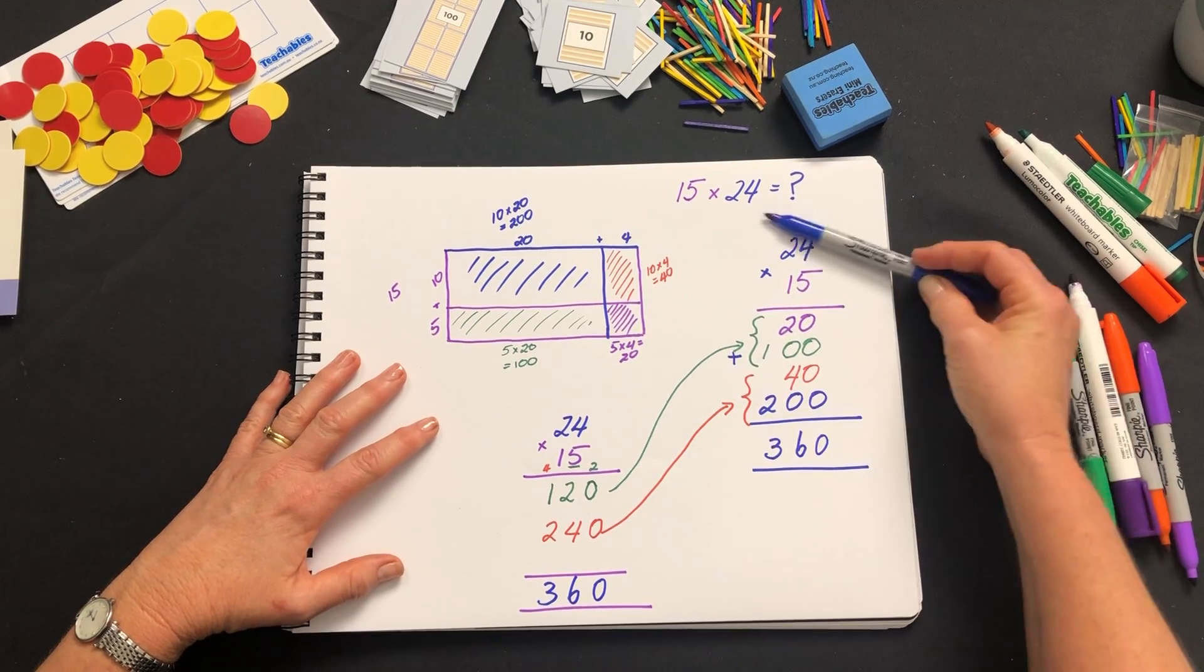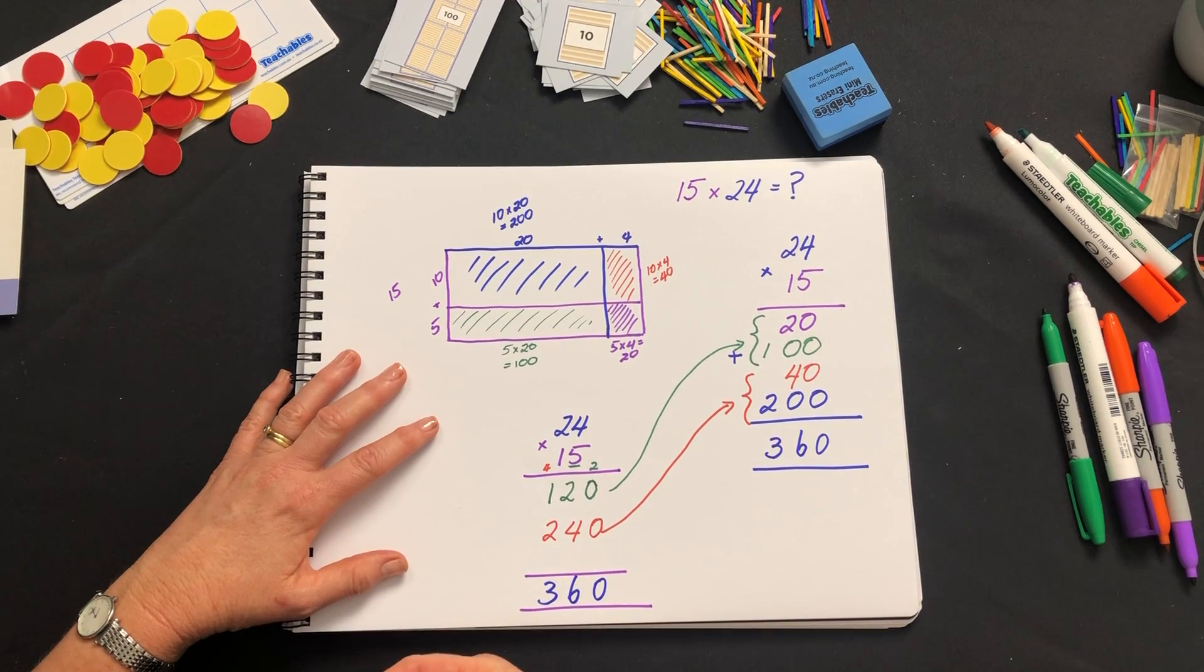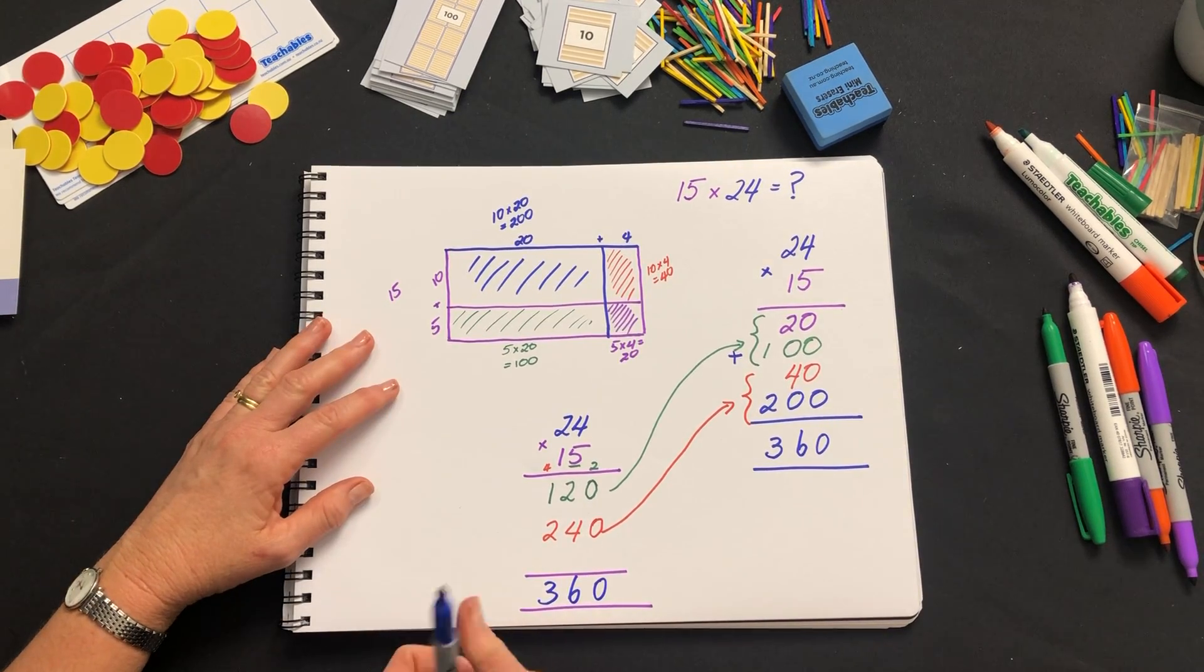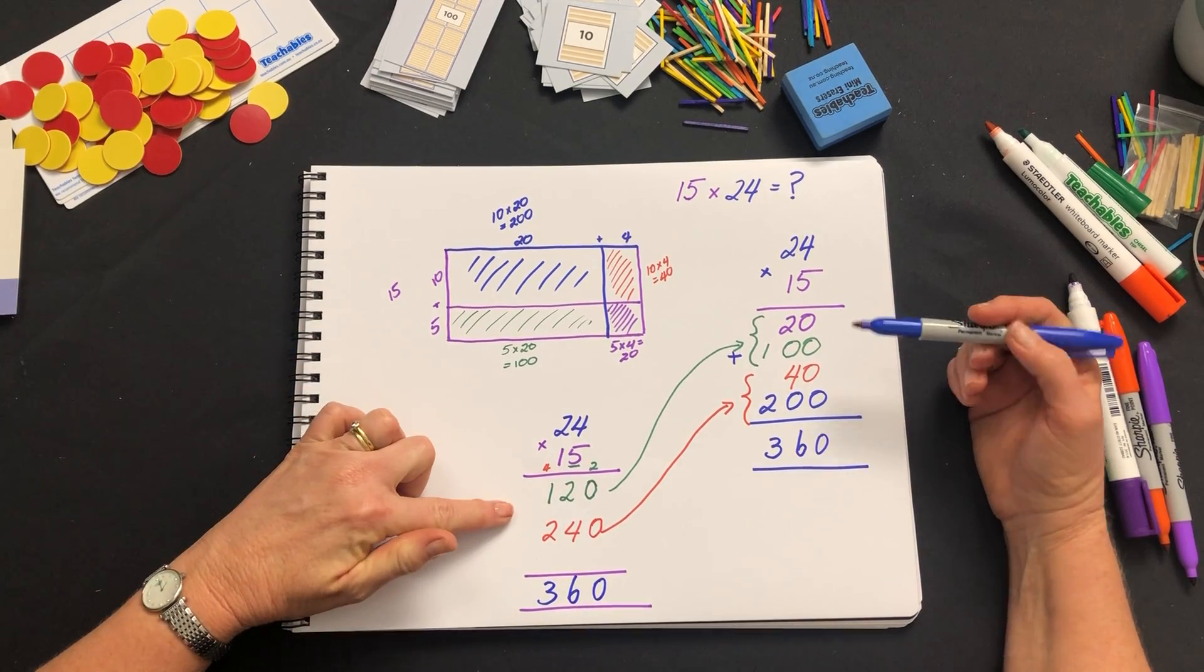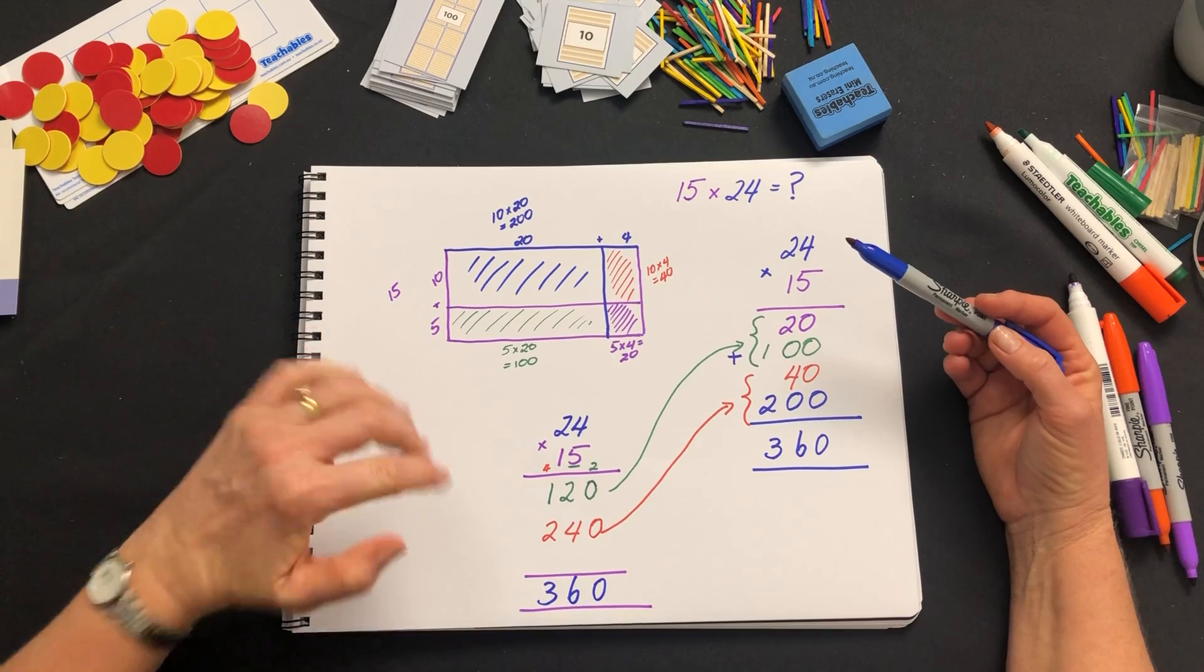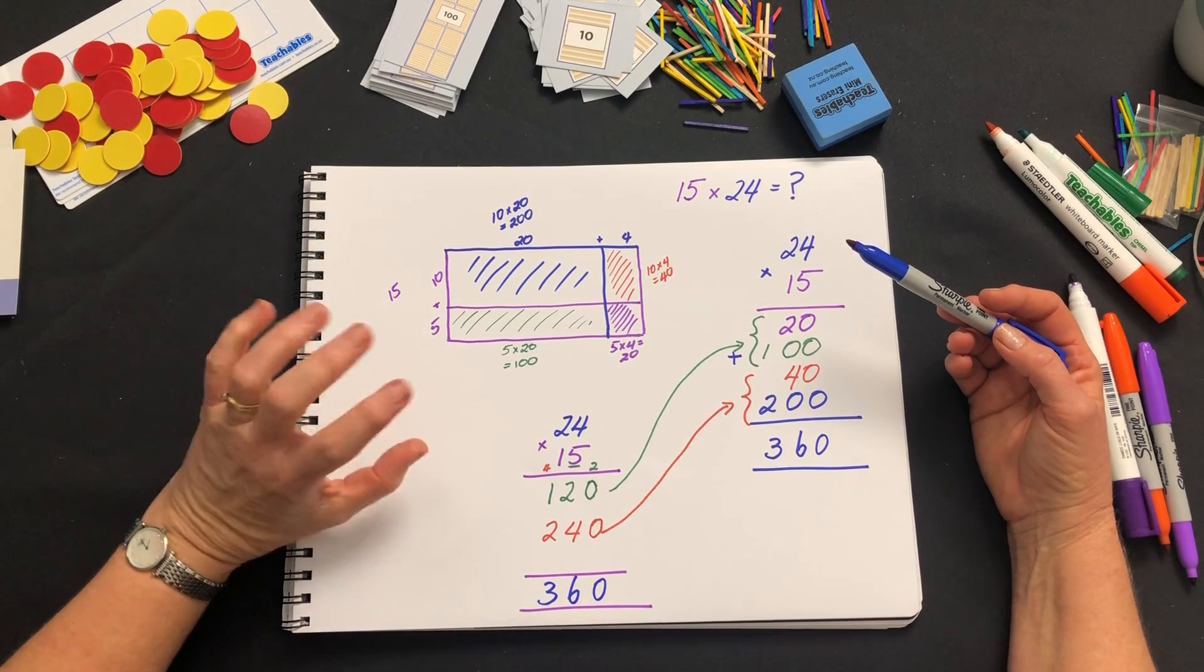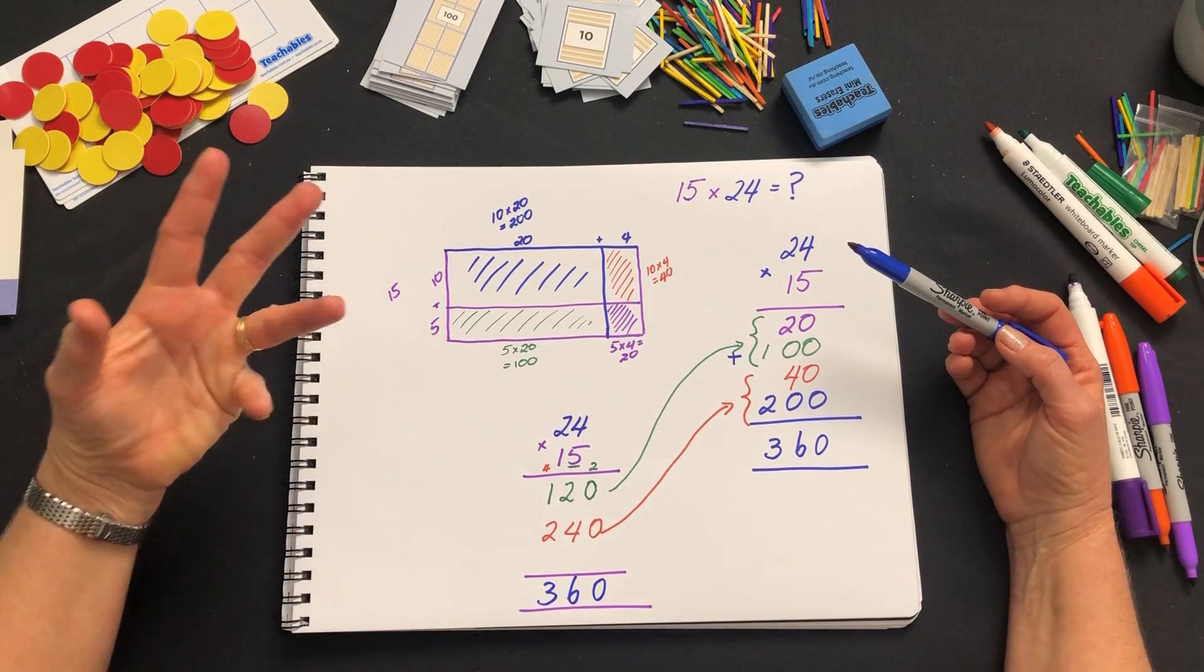Once your student understands this you'll be able to transfer them to this model. But don't try and do it too quickly. It's better for them to get this right and then move here without trying to remember a whole heap of tricks, not using the correct language, using things like putting down zeros and carrying twos instead of 20 and so on.